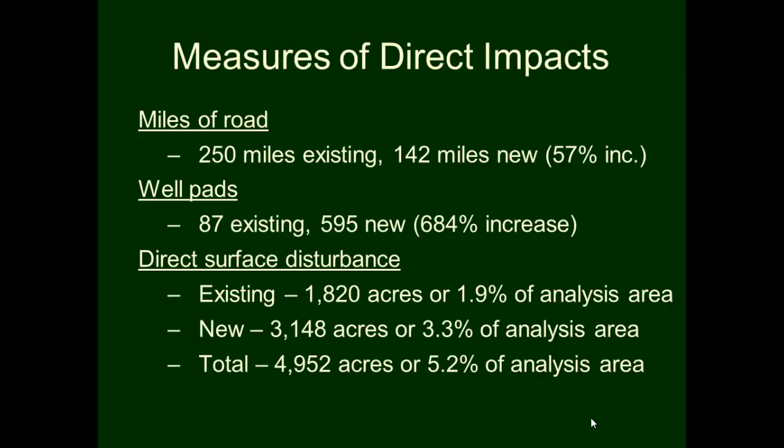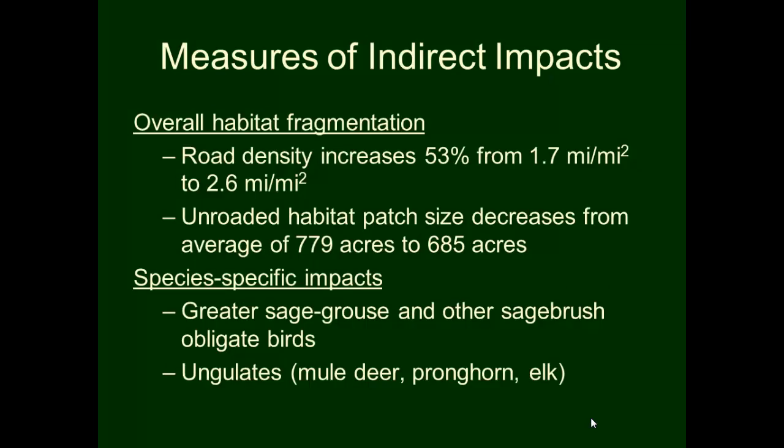Looking at direct impact measures, there would be an additional 142 miles of new roads, 595 new wells, and a total of about five percent direct disturbance from road rights-of-way and well pads. We simplified our analysis because we did not include pipelines, pumping stations, and other infrastructure that would actually raise those numbers somewhat higher, since we didn't have enough placement information for those at the time.